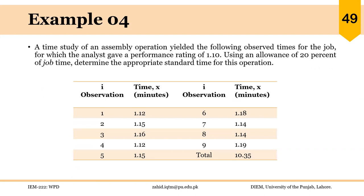In the first example, we are given that a time study of an assembly operation generated the following observed times for the job. The analyst gave a performance rating of 1.10, using an allowance of 20% of job time. In this case, we have just one element of the job — we have not divided it into elements — and we have taken nine readings.